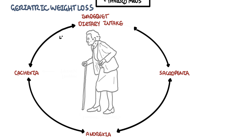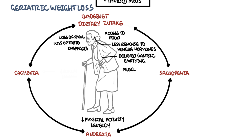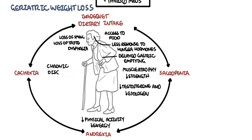Going deeper, older people have loss of smell and taste, difficulty with swallowing, difficulty accessing food, normally delayed gastric emptying (gastroparesis), and less response to hunger hormones. Further, because of age, there is reduced physical activity, muscle strength, muscle atrophy, and reduced hormones including testosterone and estrogen, which are important for these functions. There is also an increased likelihood of having chronic diseases, which also play a role in weight loss.